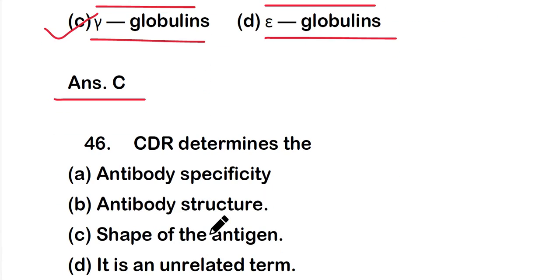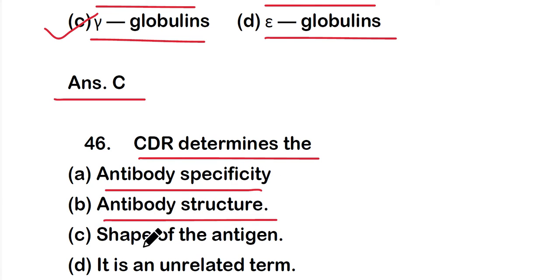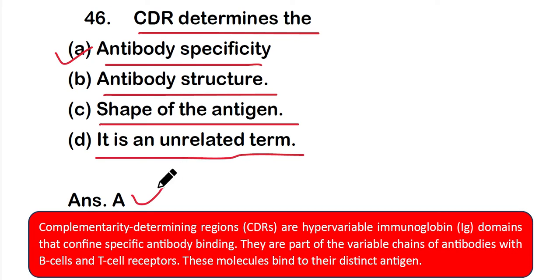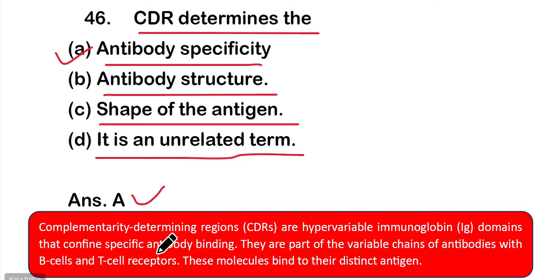Question 46: CDR determines option A antibody specificity, option B antibody structure, option C shape of antigen, or option D it is an unrelated term. The right answer is option A — antibody specificity. CDR stands for complementarity determining region, a hypervariable immunoglobulin domain that confers specific antibody binding. CDR molecules are part of the variable chain of antibodies with B cell and T cell receptors and bind to distinct antigens.